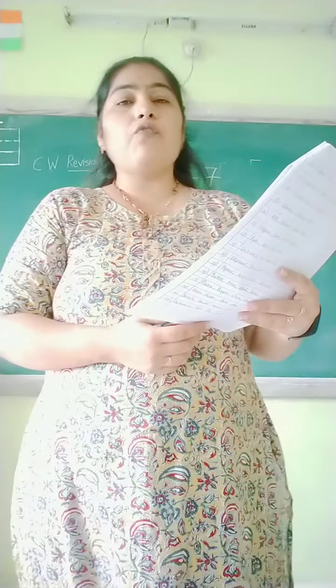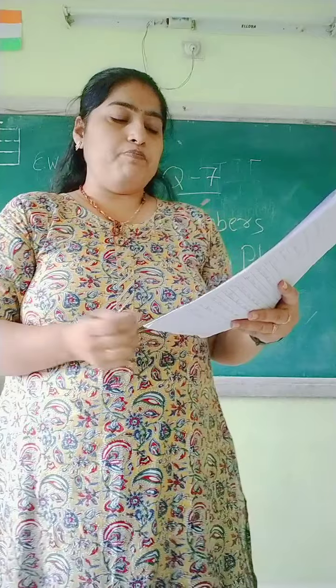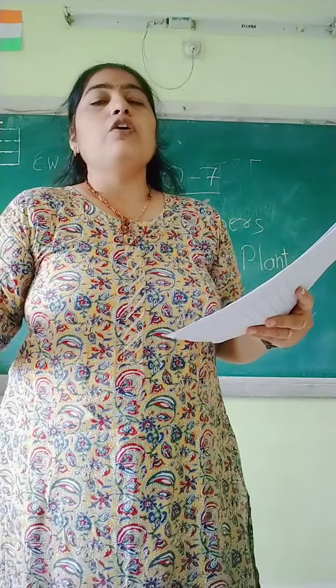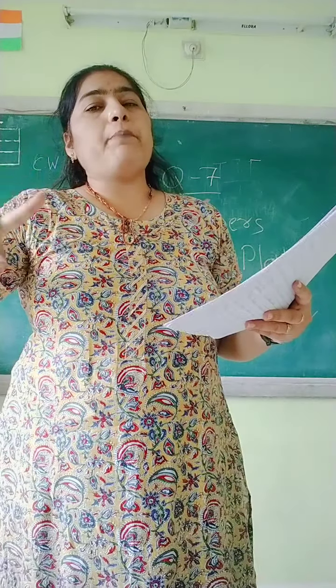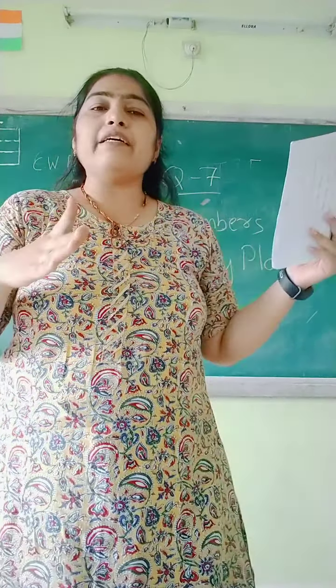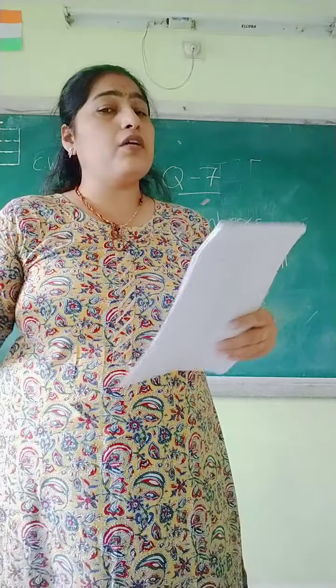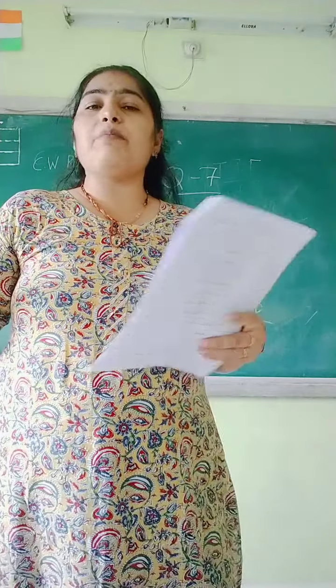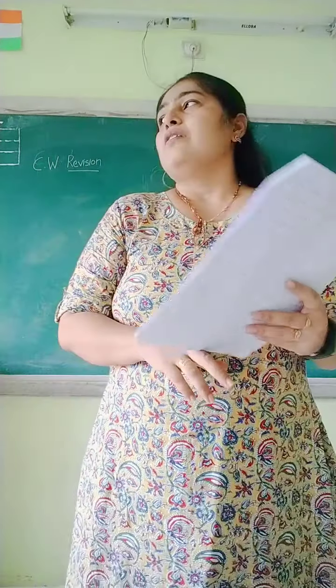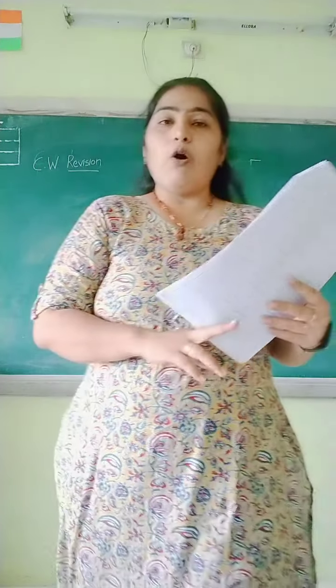Pen, paper, water, book — pen, paper, and book are in one category, but water is in a different category. So water is the odd one. Circle water.